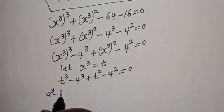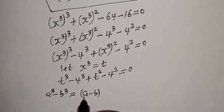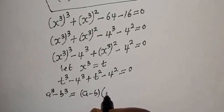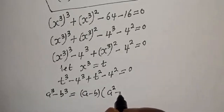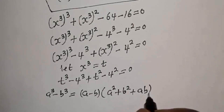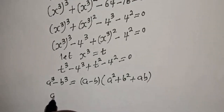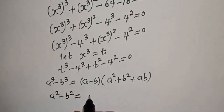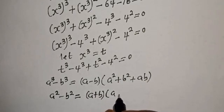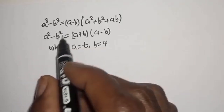Recall that a cubed minus b cubed is equal to a minus b, multiplied by a squared plus b squared plus a times b. Also, if you have a squared minus b squared, this is equal to a plus b multiplied by a minus b.